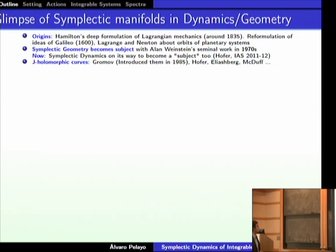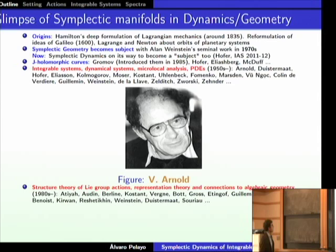J-holomorphic curves have been used by many authors, notably by Helmut Hofer, Jacob Eliashberg, Dusa McDuff, and many other people. There are yet more aspects of the subject — shown in red are the ones I have been most interested in myself — which are integrable systems, dynamical systems, micro-local analysis, and PDEs. Many authors have contributed to these, for example Arnold, Duistermaat, Helmut Hofer, Eliasson, Kolmogorov, Konstant, and Uhlenbeck.